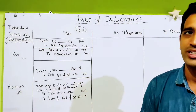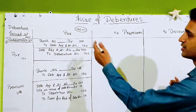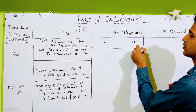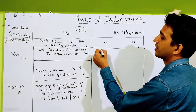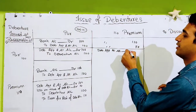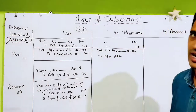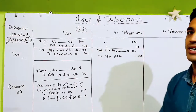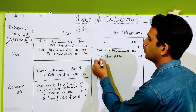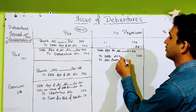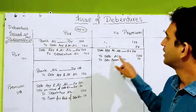Next — debenture issued at premium, redeemable at par. Entry 1: Bank Account debit 110, to Debenture Application and Allotment Account 110 — जितना पैसा लिया दिखा दो. Entry 2: Debenture Application and Allotment Account debit 110, to Debenture Account 100, to Security Premium Account 10. 10 रुपये extra मिले — यह my benefit है, credit makes a difference.